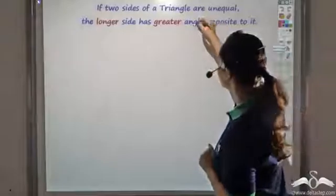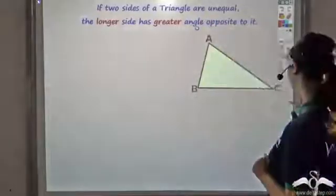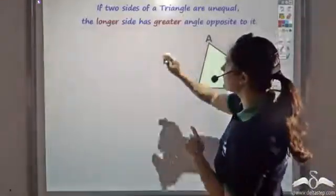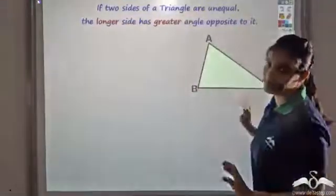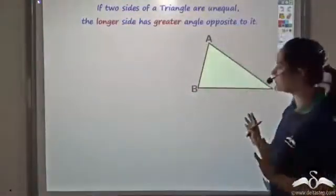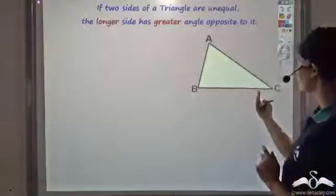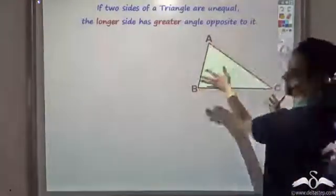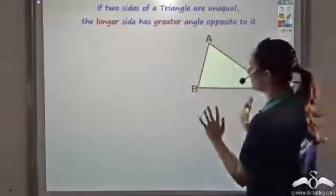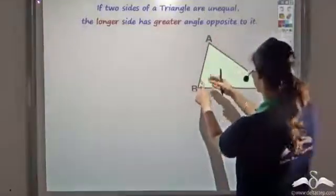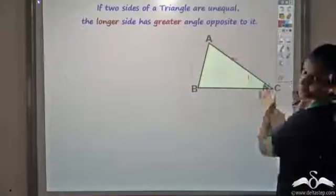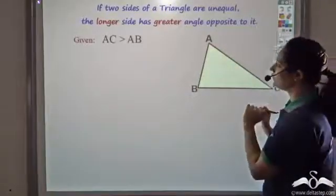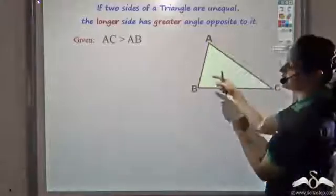For that we need a triangle. Let's say we have triangle ABC. What I am given is that two sides of the triangle are unequal. AB and AC are unequal — let's say AB is less than AC, so AC is the longer side. What we know is that AC is greater than AB.